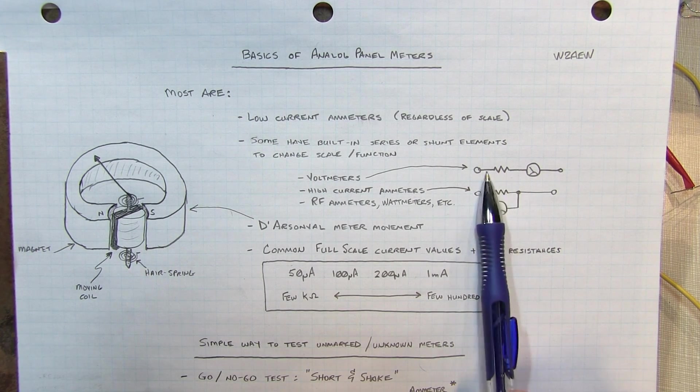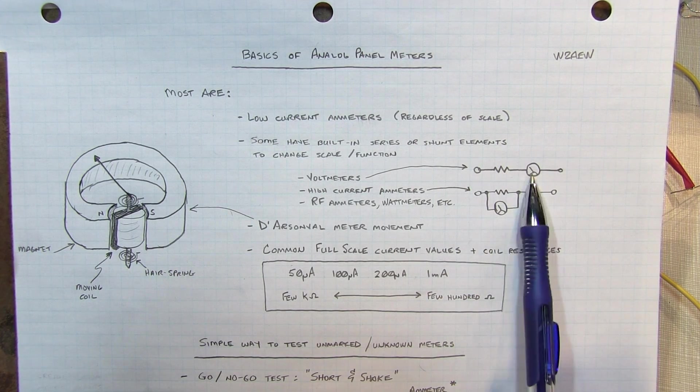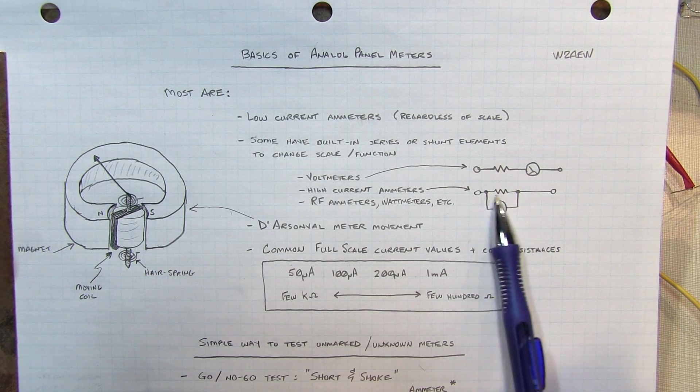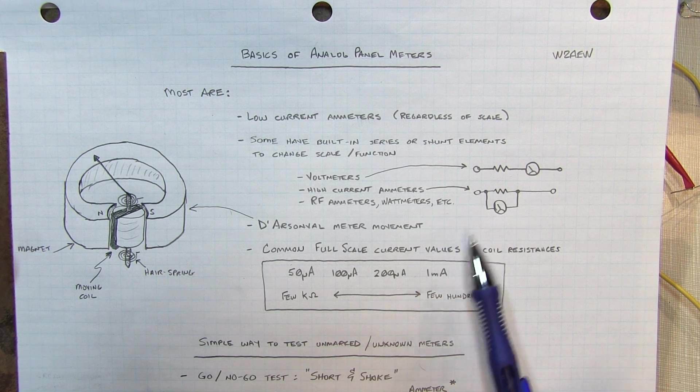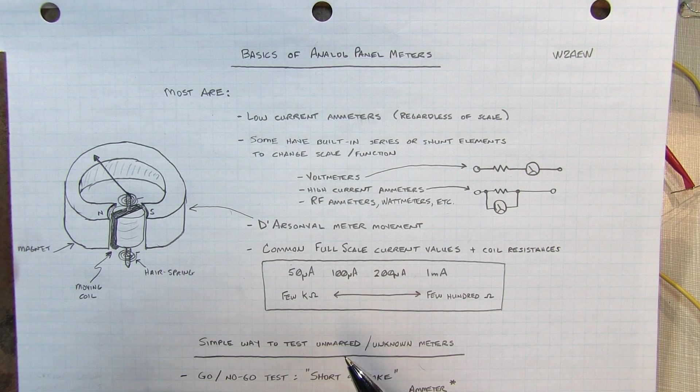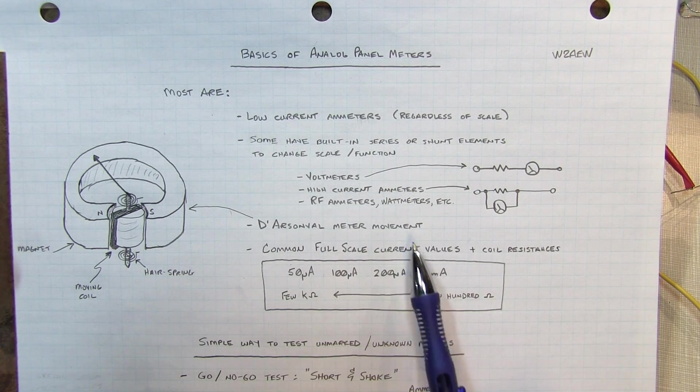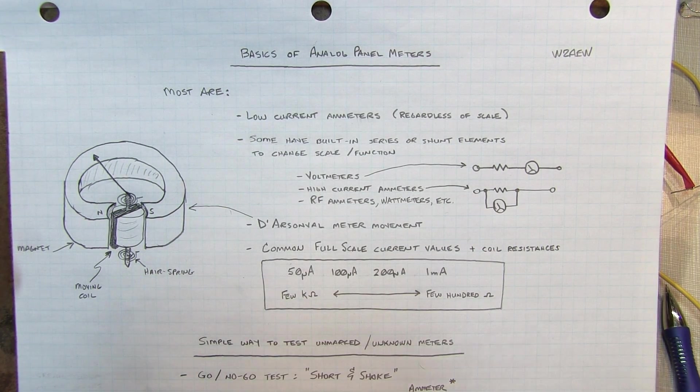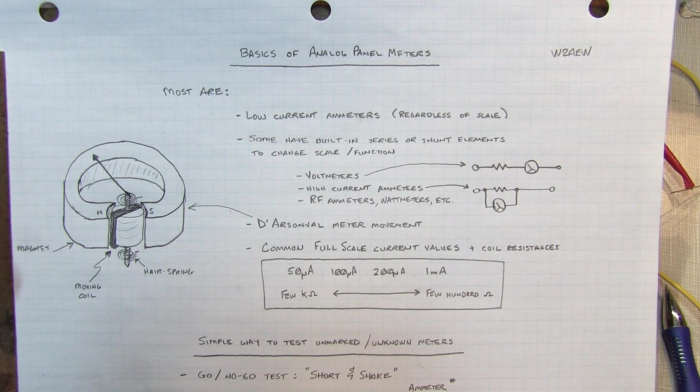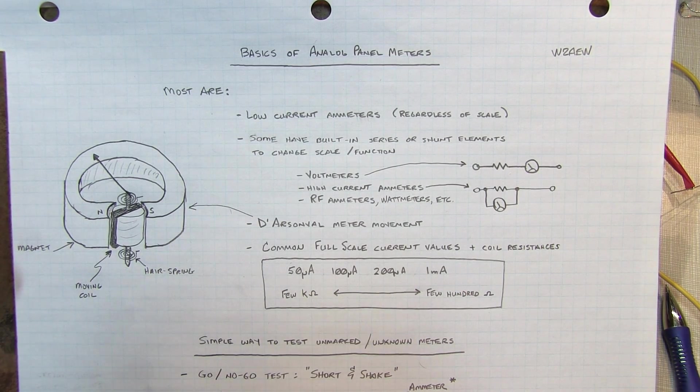Now oftentimes when these meters are used in equipment, there'll be maybe a resistor placed in series to turn the meter into a voltmeter, or there might be a shunt placed in parallel with the meter to turn the meter into a higher current ammeter. There may be other circuitry like RF sensing circuitry or things like that to make things like RF ammeters, wattmeters, etc. But at the end of the day, the meter movement itself is simply just a low current ammeter.